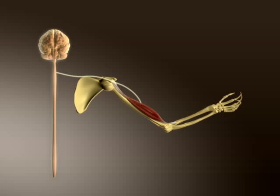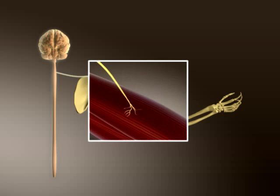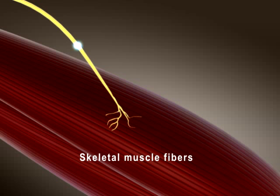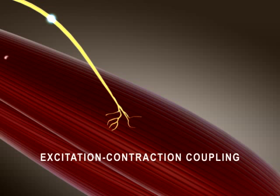Typically, a single motor neuron arising in the brain or spinal cord conducts action potentials that travel to hundreds of skeletal muscle fibers within a muscle. The sequence of events that converts action potentials in a muscle fiber to a contraction is known as excitation-contraction coupling.